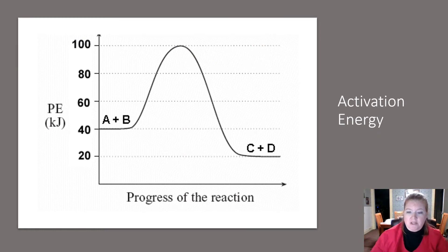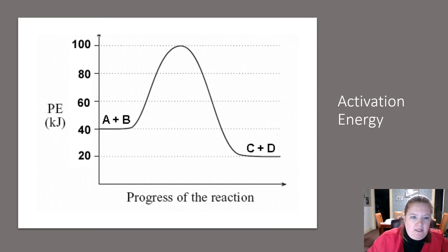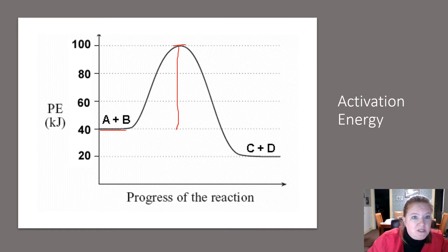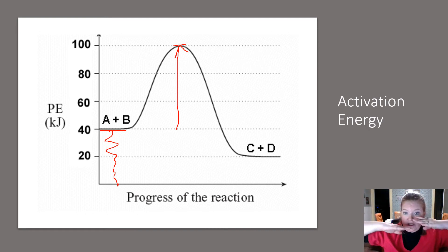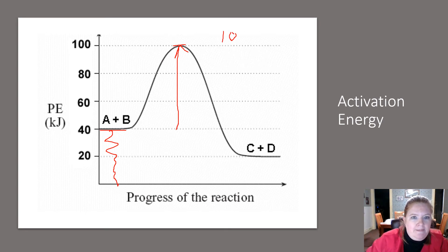What about the activation energy? The activation energy is what it takes to get from the reactants to the tip top. It does not include the energy already held by the reactants — that's just where you're starting. So activation energy takes you from the reactants to the tip top. In this case, it would be 100 minus 40, giving us 60 kilojoules.